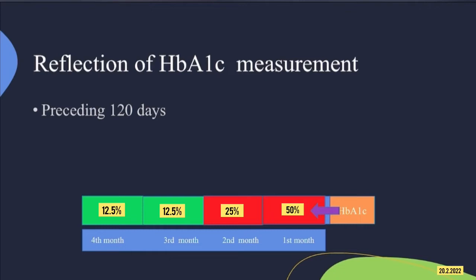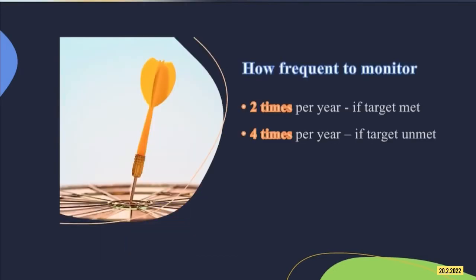HbA1c measurement reflects average glucose concentration over the previous 120 days. We should know how frequently to monitor HbA1c. If the HbA1c target is achieved and the patient has good glycemic control, two times per year is enough. On the other hand, if the patient has poor glycemic control and cannot achieve the HbA1c target, it should be monitored four times per year.